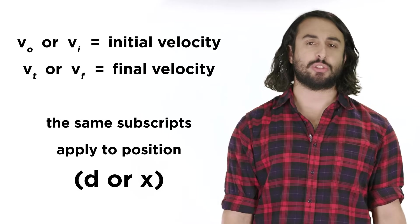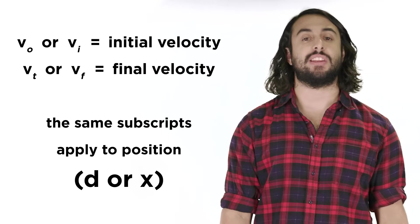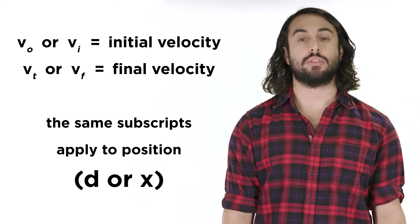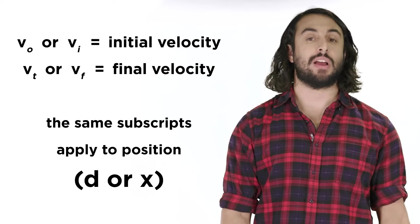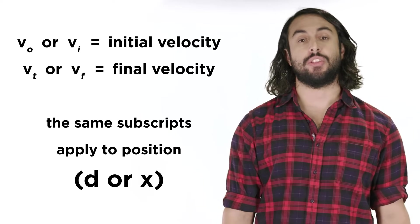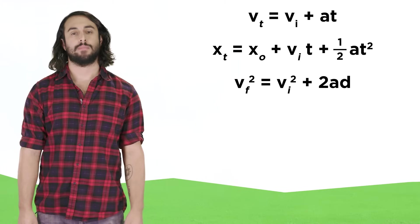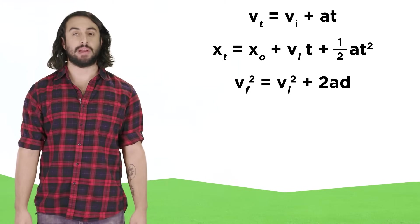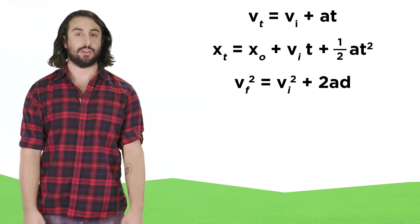When you see a subscript of zero after velocity or displacement, it indicates initial conditions, which will have some implication depending on the problem we are looking at. Here are the three fundamental kinematic equations we will be using.